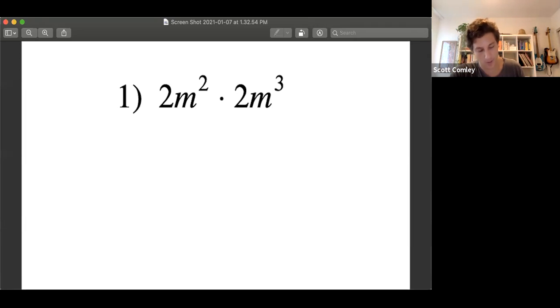First thing is if you have two variables like m here, m to the second, m to the third, if they're next to each other, you can actually add the two exponents. So m to the second, m to the third, we're going to add two and three. That would just be m to the fifth.